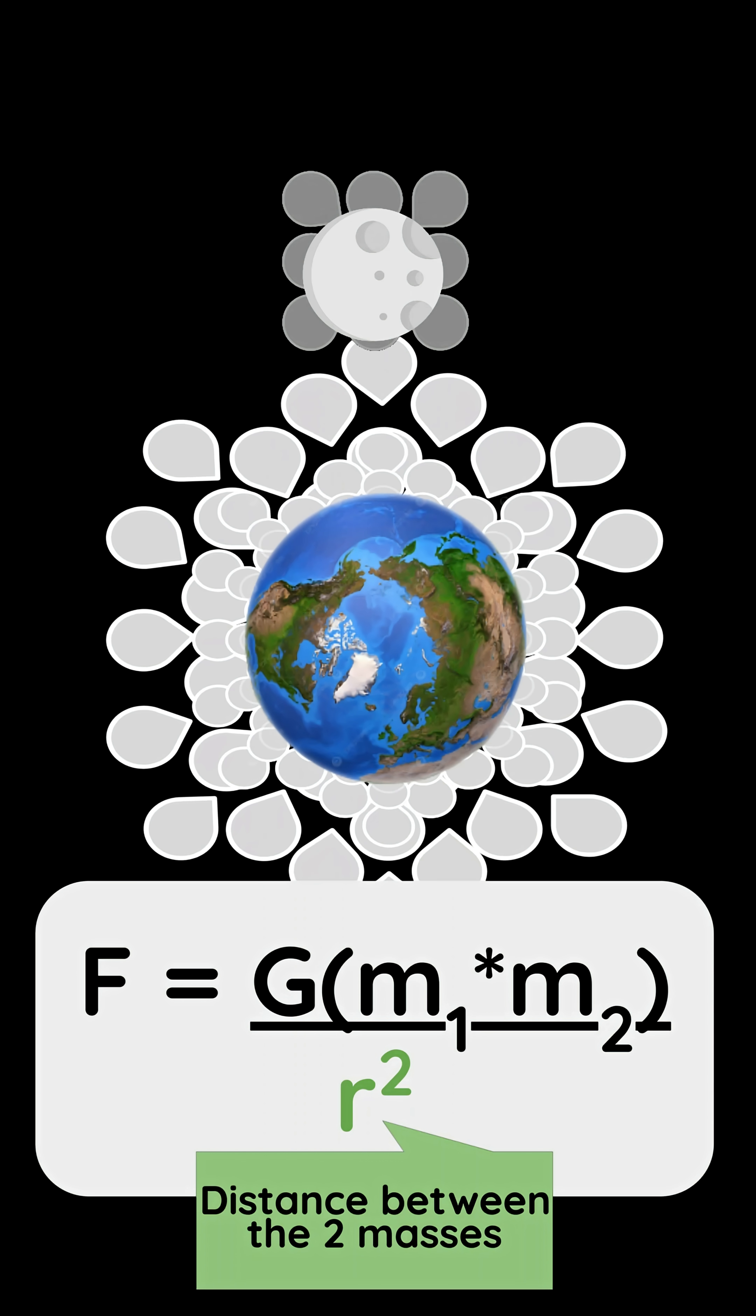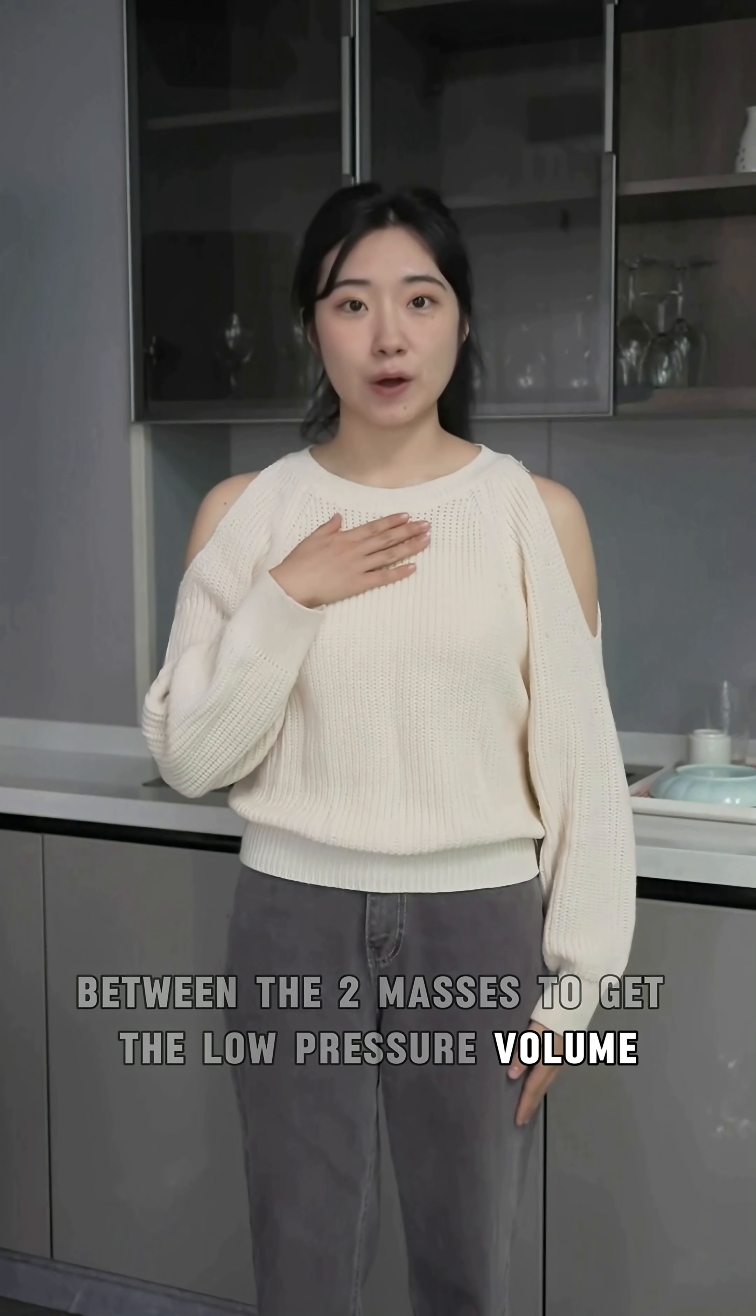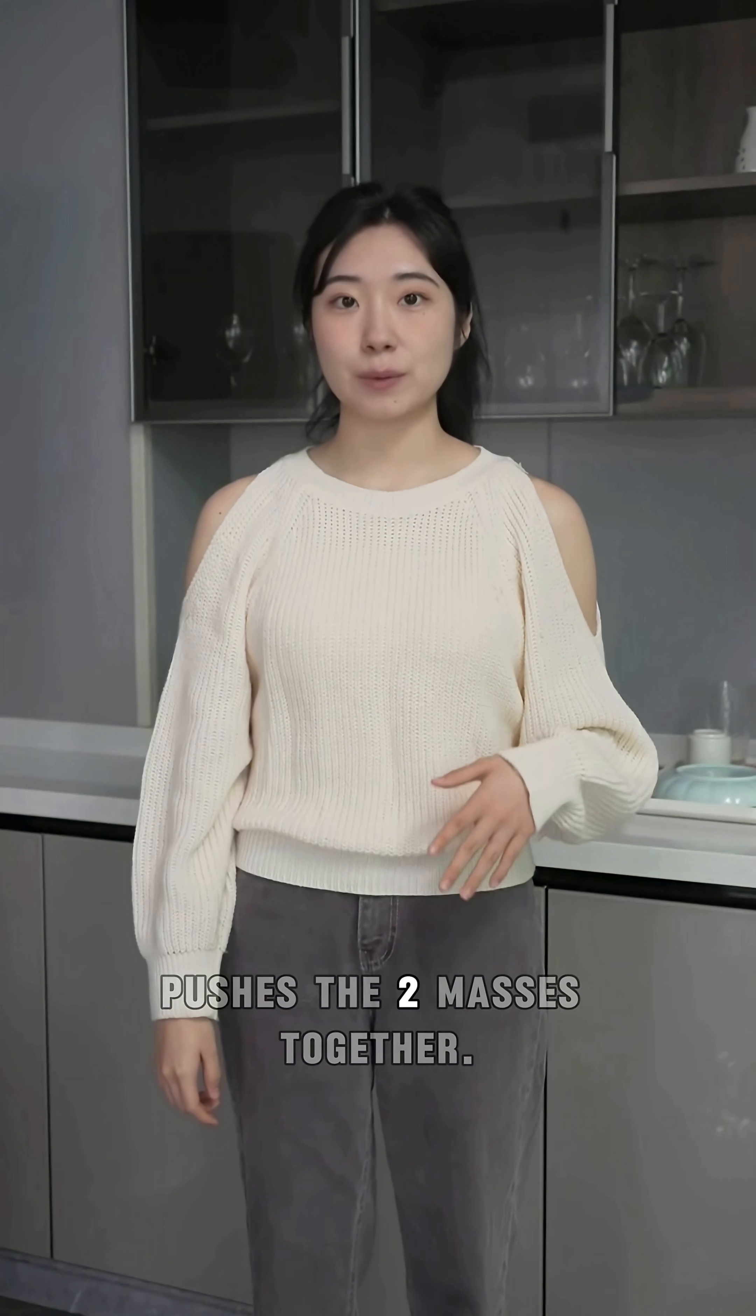We then divide this total volume by the distance between the two masses to get the low pressure volume which directly exposes the high pressure that pushes the two masses together.